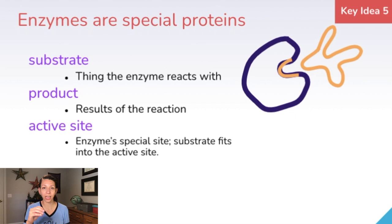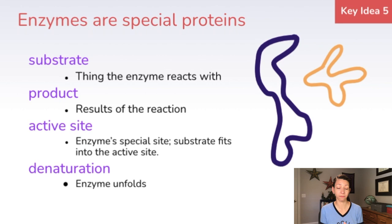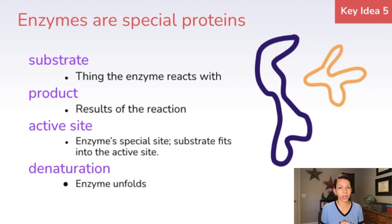Enzymes can be affected by certain environmental changes like temperature and pH. If an enzyme gets too hot, the amino acids inside can start to unfold, because enzymes are proteins made of amino acids. When it unfolds — or is denatured — it may no longer fit with its substrate and can't perform the reactions that it needs to.